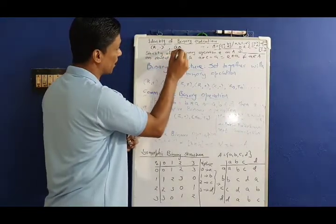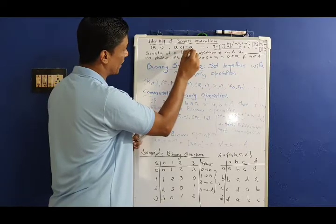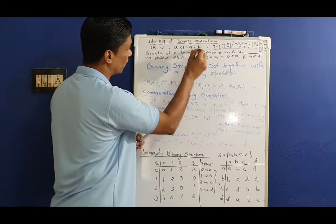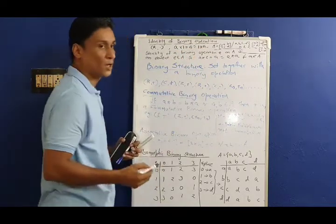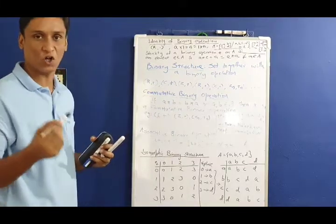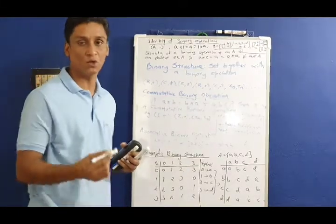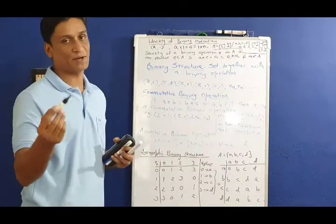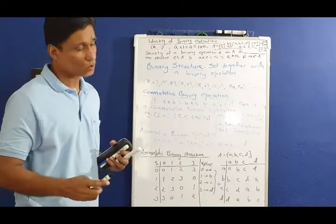For real numbers under multiplication, a times 1 equals 1 times a equals a. So the identity element for the set of real numbers under multiplication is 1.